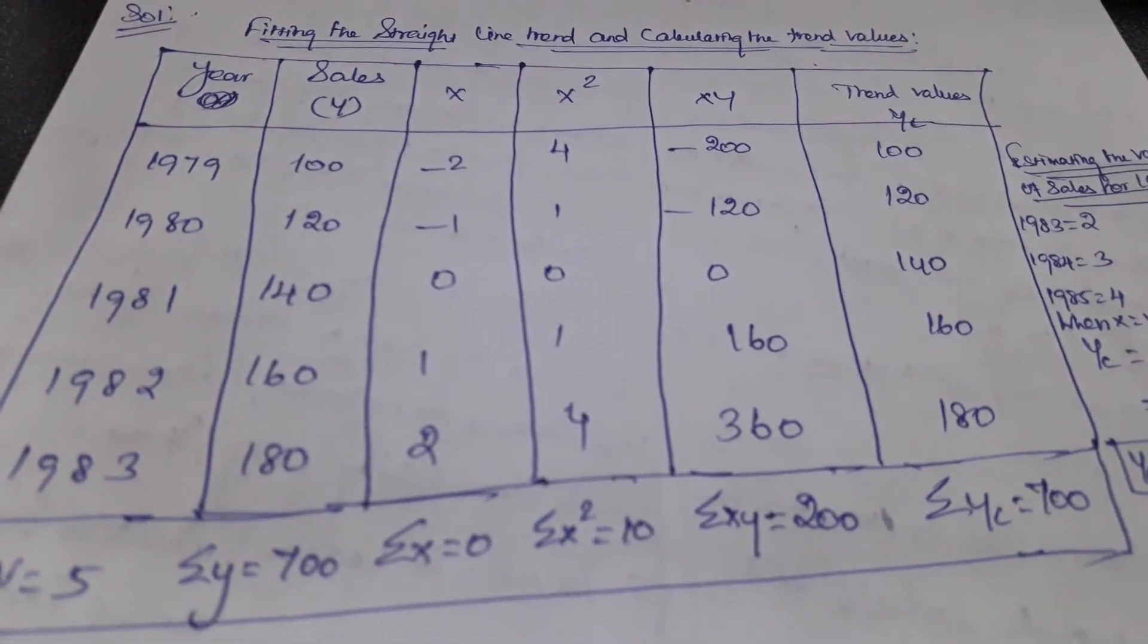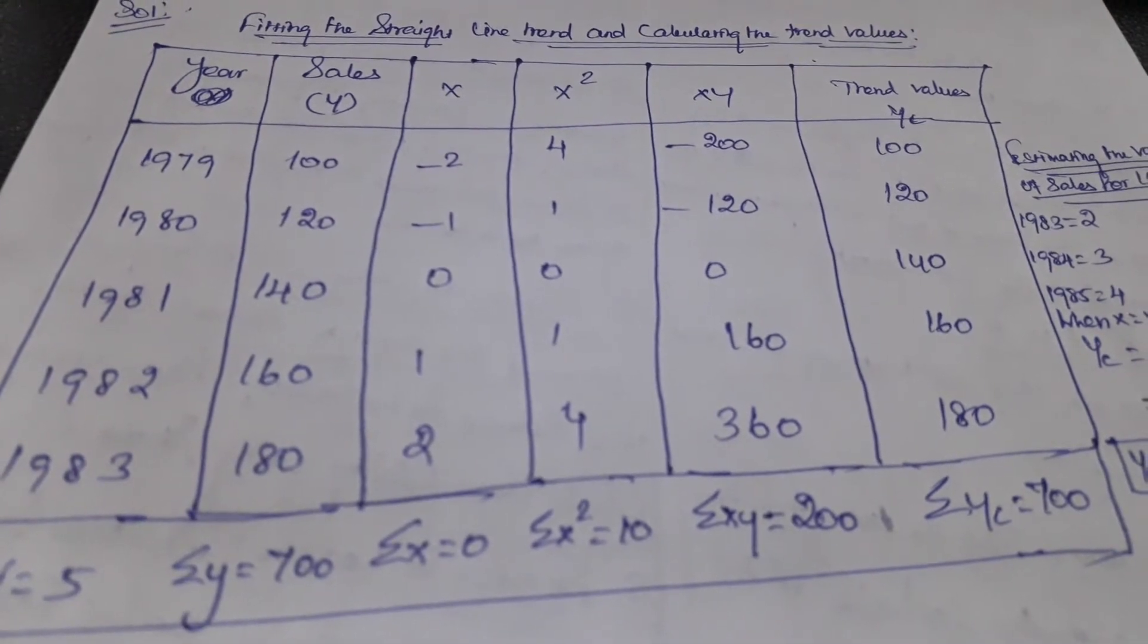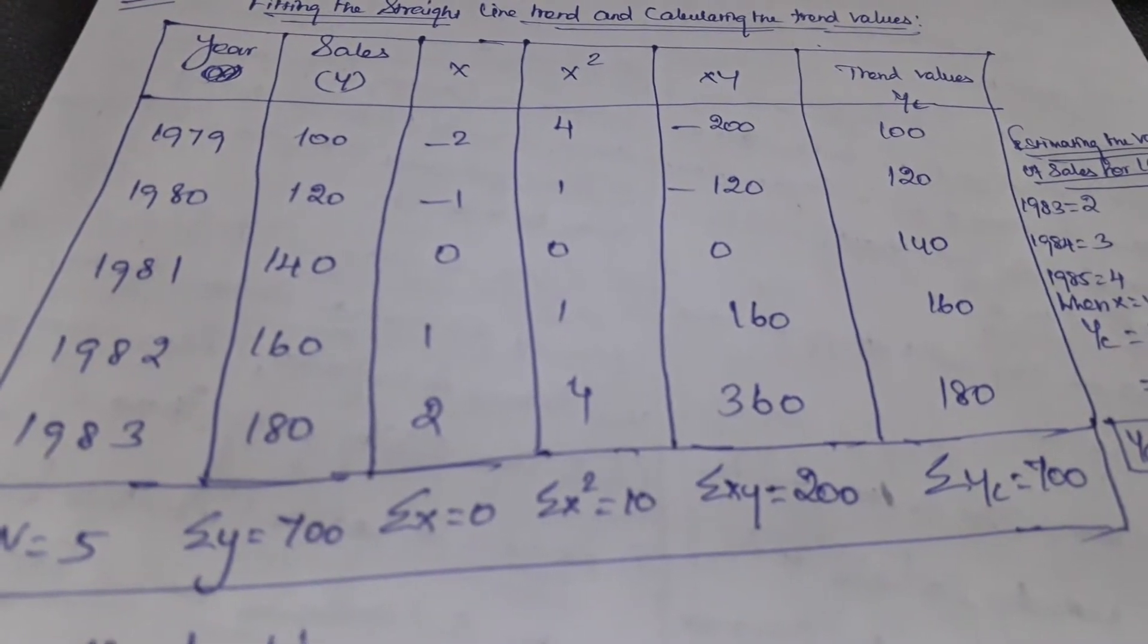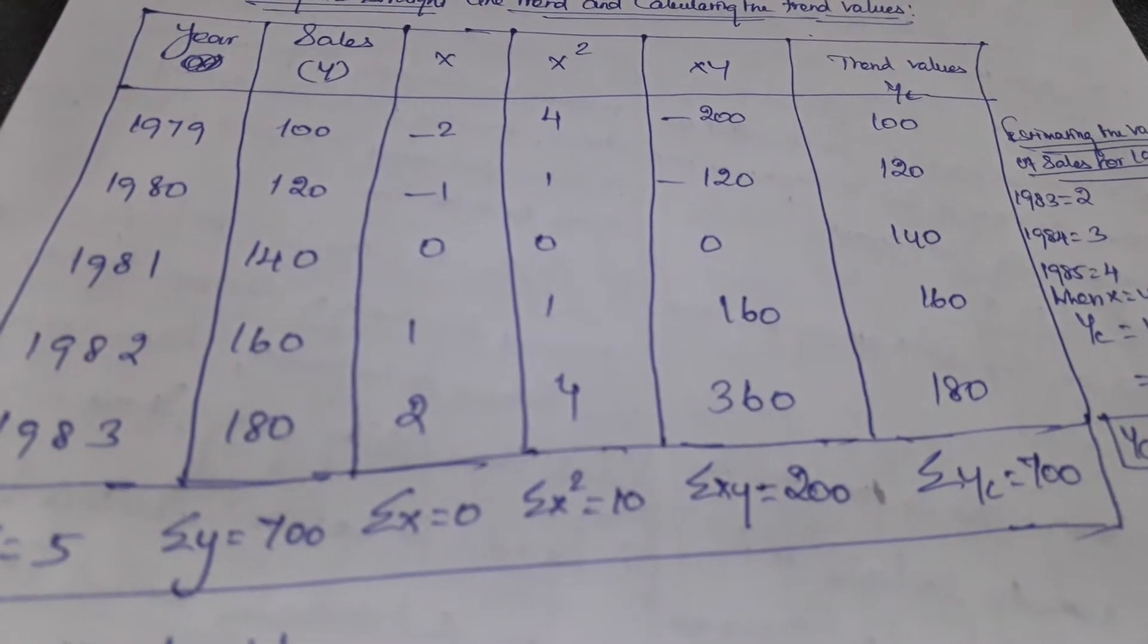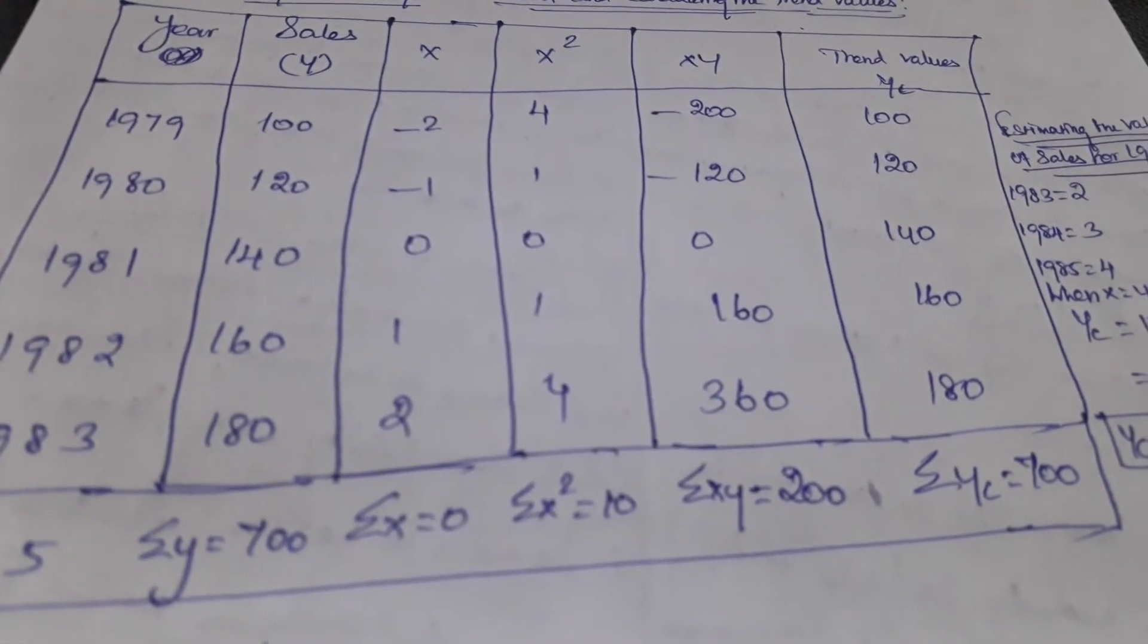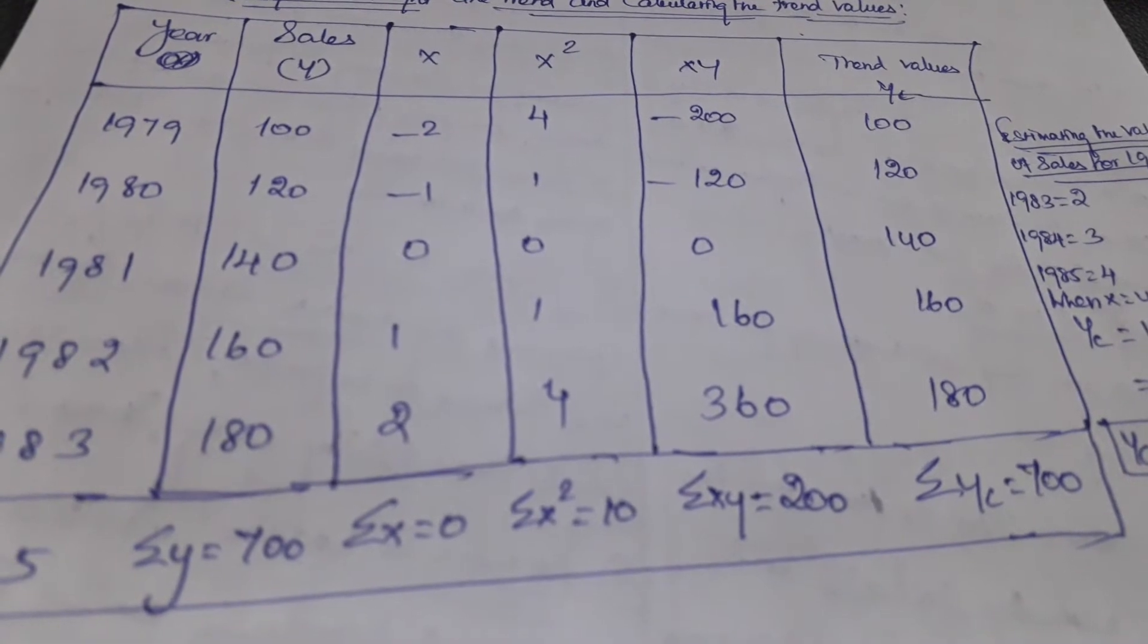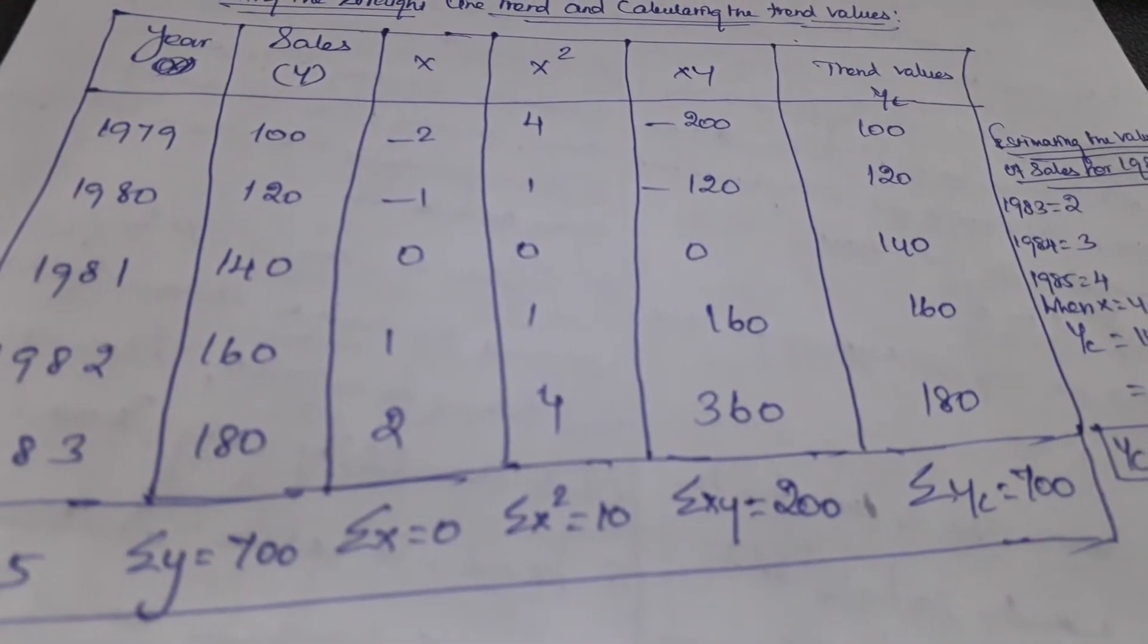We need to assume the middle value as zero. Above that we put -1 and -2, below that we put 1 and 2. The total of X would be zero, so summation of X equals zero. Then we square X: 4, 1, 0, 1, 4. Then we multiply X and Y.